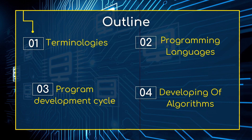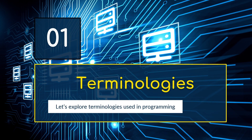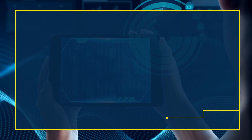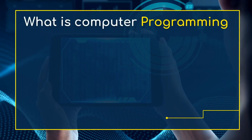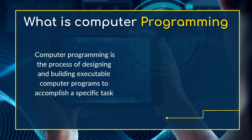Let's begin with the terminologies. There are many terms used in programming, but we'll be sampling very few. To begin with, let us look at what computer programming is. Computer programming simply means the process of designing and building executable programs to accomplish specific tasks — or simply, the process of writing computer programs.